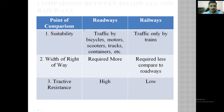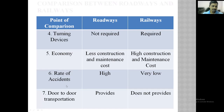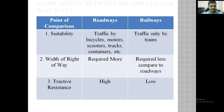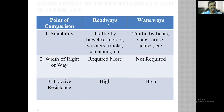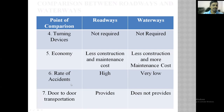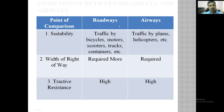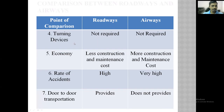If you want to compare roadways and railways, these are the different comparison points: suitability, width of right of way, tractive resistance, turning devices, economy, rate of accidents, door-to-door transportation. In a similar way, you can compare roadways and waterways — same points will apply. And roadways and airways can also be compared. So you can write the comparison between roadways, airways, and waterways.